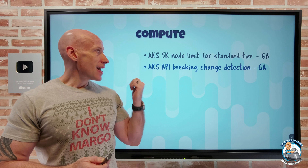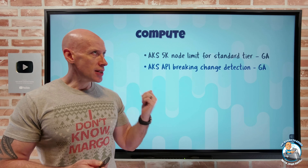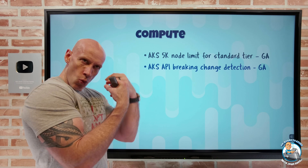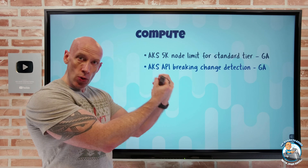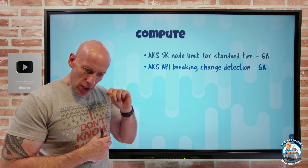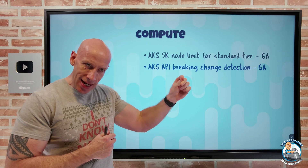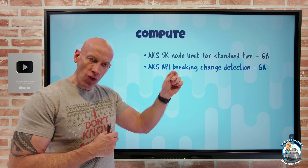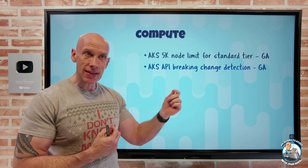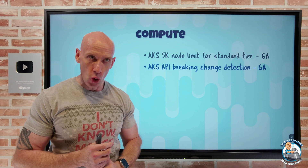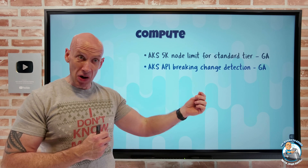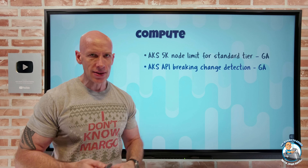The AKS API breaking change detection has gone GA. This is all about moving from one version of Kubernetes to a newer supported version. It will look at whether, based on your intended target version, you're using an API that's been deprecated and would break your deployment — saving you time from doing the upgrade and then trying to work out why things aren't working.